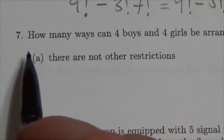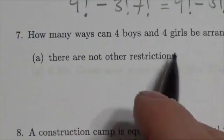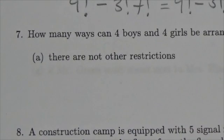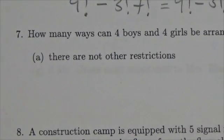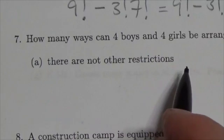Alright, this question is saying that we've got four boys and four girls and we're going to try to figure out how many ways we can line them up if they have to alternate. And there's no other restrictions here.